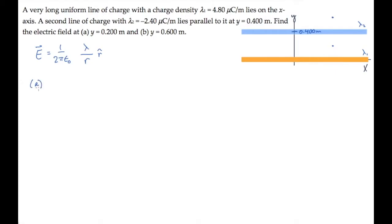In part A, when we're located here, we see the electric field from the orange line is away from it, because lambda 1 is positive, and the field from lambda 2 is directed towards it, because it's negative, so both are in the positive y direction. The total electric field, then, is E1 plus E2.